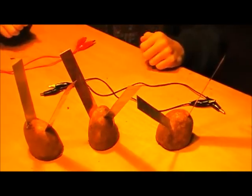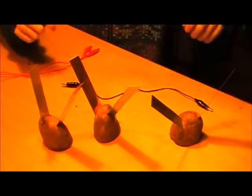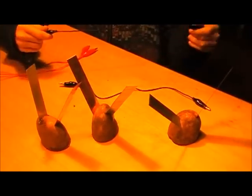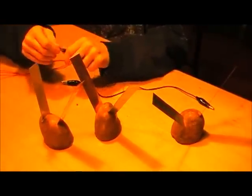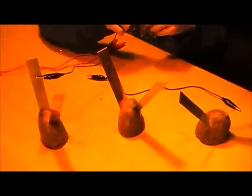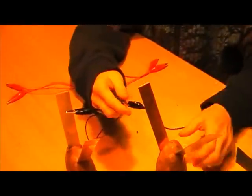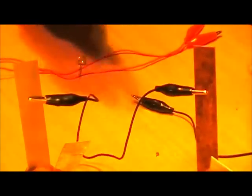Once you finish that, grab your black lead wire or alligator clip and put it on this zinc electrode. Then put the other end of the alligator clip onto this copper electrode on the other potato.